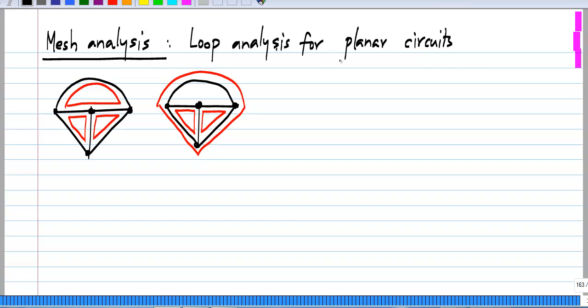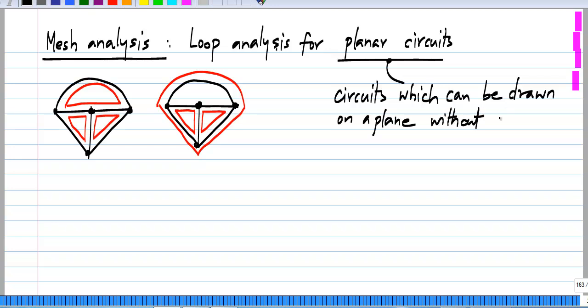What are planar circuits? Very simply put, they are circuits which can be drawn on a plane like a piece of paper or the screen without crossing branches. For instance, this particular graph, you see that no two branches are crossing each other. So this is definitely a planar circuit.